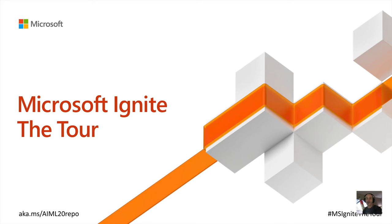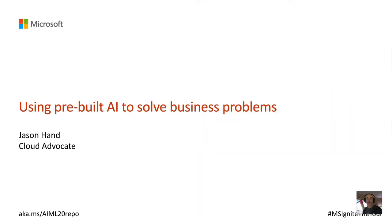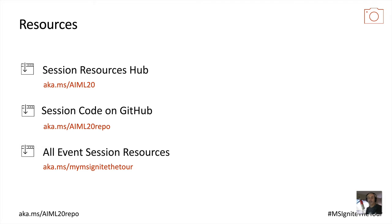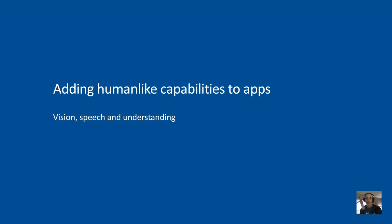Welcome, this will be dry run number one. We're going to be talking about using pre-built AI to solve business problems. My name is Jason Hand, I'm a cloud advocate for Microsoft. There's going to be lots of information, links, and a back-end system available to you. I'll also be providing these slides at the end so you can capture them later.